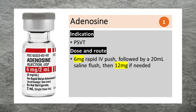Adenosine is used to treat paroxysmal supraventricular tachycardia, PSVT. It can be given as a rapid IV push of 6 mg, followed by a 20 ml saline flush, and then 12 mg if needed.